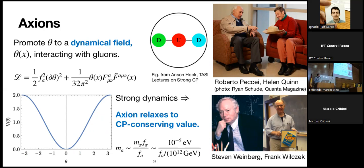The best answer to this puzzle — the strong CP problem — comes from work by Peccei and Quinn in the 70s, with further interpretation from Weinberg and Wilczek: promote theta to a dynamical field. We imagine a dynamical scalar field theta with this F-wedge-F interaction with gluons, and such an interaction will dynamically relax theta to a CP-conserving value. The mass of the axion is given by a very small number — a ratio of essentially the pion mass scale to some scale f that appears in the Lagrangian, which can be a very high scale. If f is 10^{12} GeV, the axion mass is in the few-microeV range — it's a very light particle because it's inversely sensitive to a very high scale.